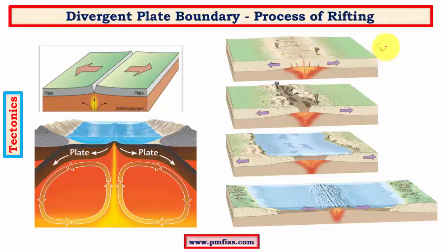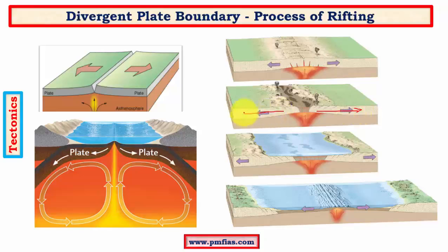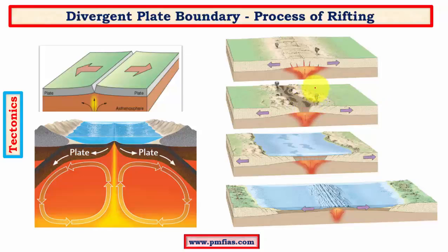In the upwarping process, we have deformation of the earth's crust with establishment of a series of faults, and the normal fault is the most dominant one. Following upwarping, we have the formation of a rift valley with further divergence of plates, where a normal fault causes a block of earth to slide downwards creating a graben. The subsided block is called a graben, and the blocks at greater elevations than the graben are called horsts.